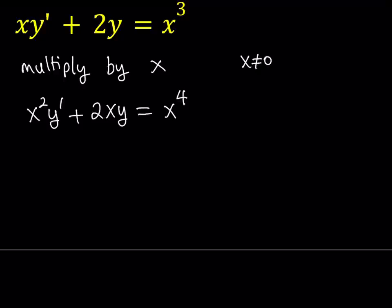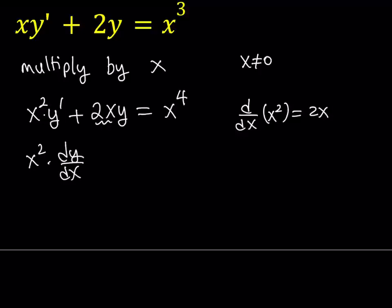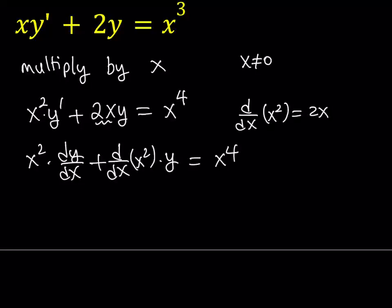Here's what I'd like you to notice: we have a product x squared multiplied by y prime, and we have a product 2x multiplied by y. Since the derivative of x squared is 2x, I can write y prime as dy over dx, and I can write the 2x as the derivative of x squared. That kind of fits the pattern of the product rule.